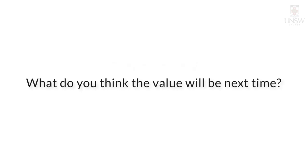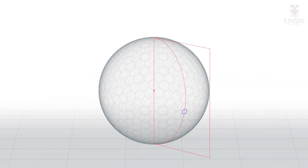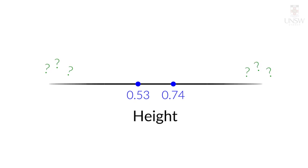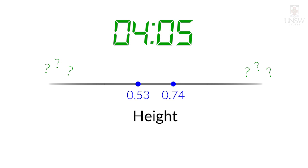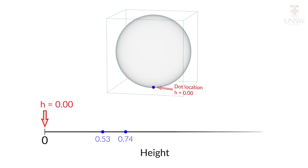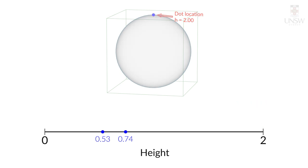Let's roll one more time. What do you think the next value will be? This time, the height is 0.74. Let's plot this value on the line as well. What are all the possible values of height one can get? You can have a height of 0 when the dot is on the ground, all the way to a height of 2 when the dot is at the top of the ball. Therefore, in this example, the dot's height can be potentially any value in the interval 0 to 2.